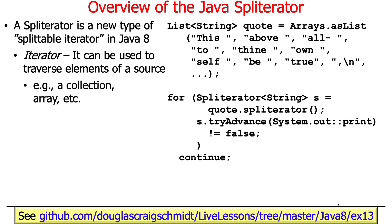Let's talk first about the iterator part. As an iterator, you can use a spliterator to traverse the elements in a source — that's why we're talking about this first, because we're going to talk about how we get our source, whatever it is, turned into a stream. The source can be various things: it could be a collection, it could be an array, or various other kinds of things.